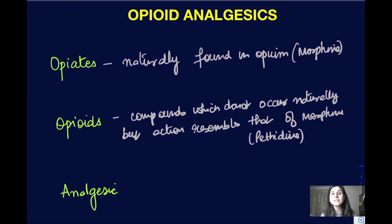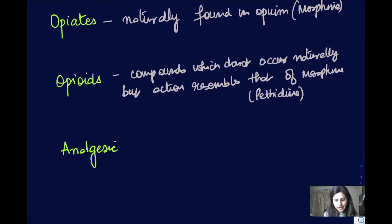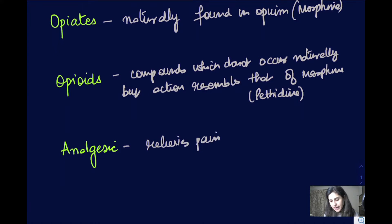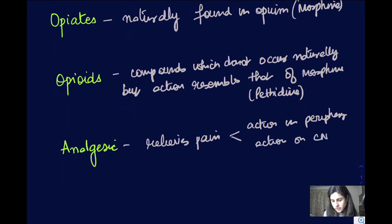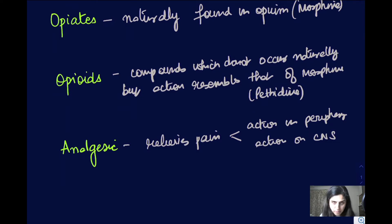An analgesic is an agent or drug which relieves pain — any kind of pain. Pain can be relieved by action on the periphery and by action on the central nervous system. Any drug or substance which relieves pain we call an analgesic.